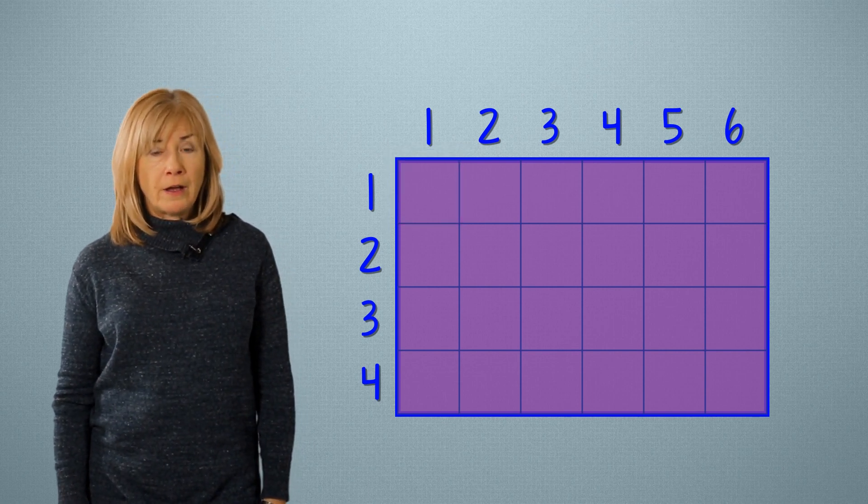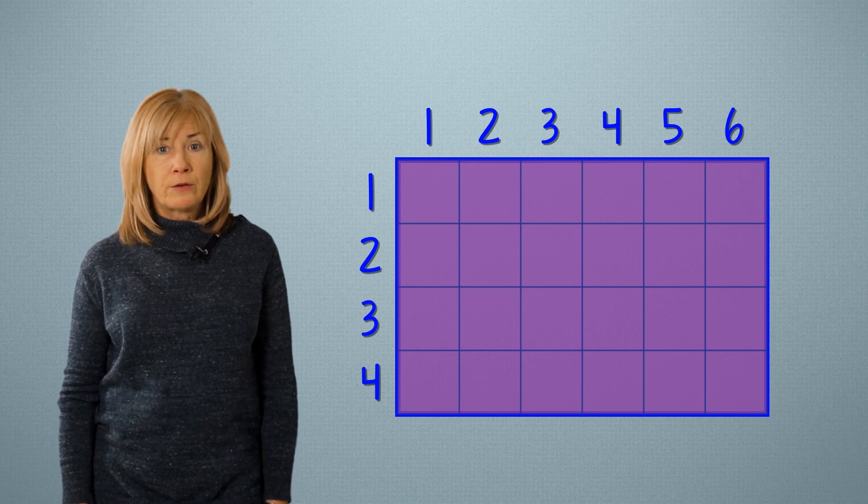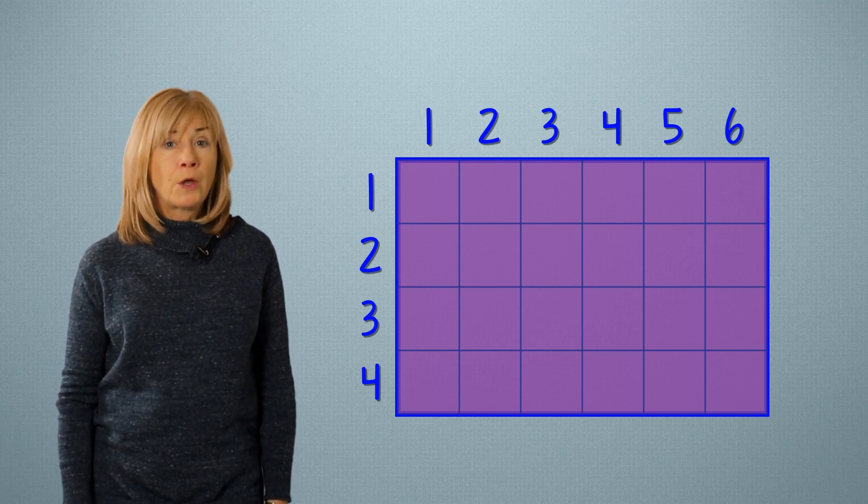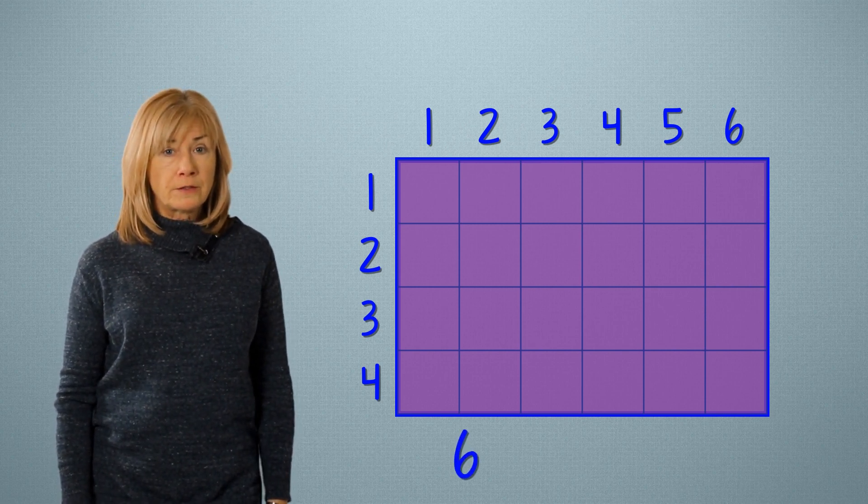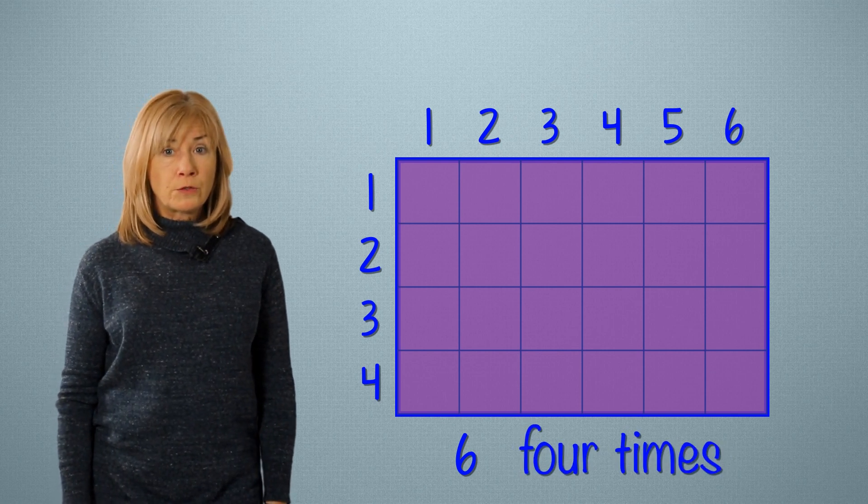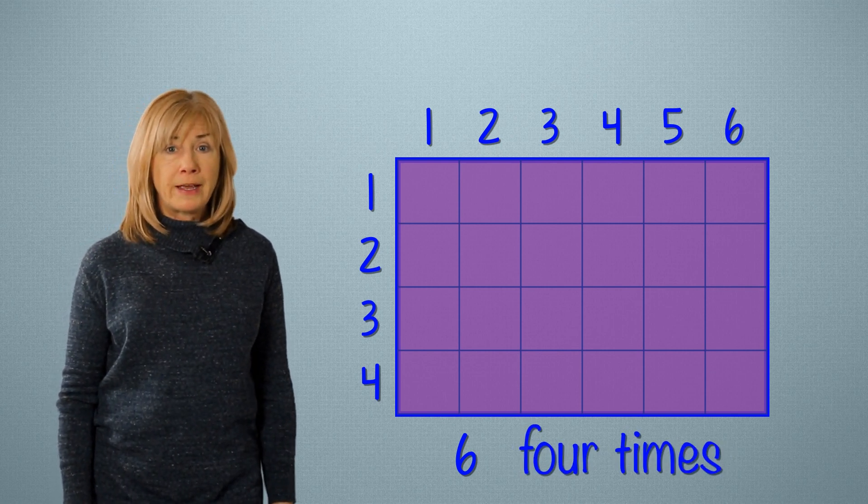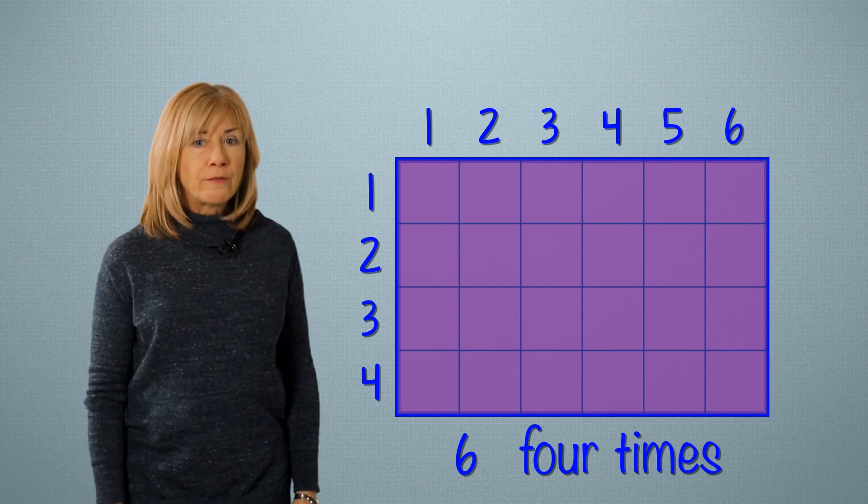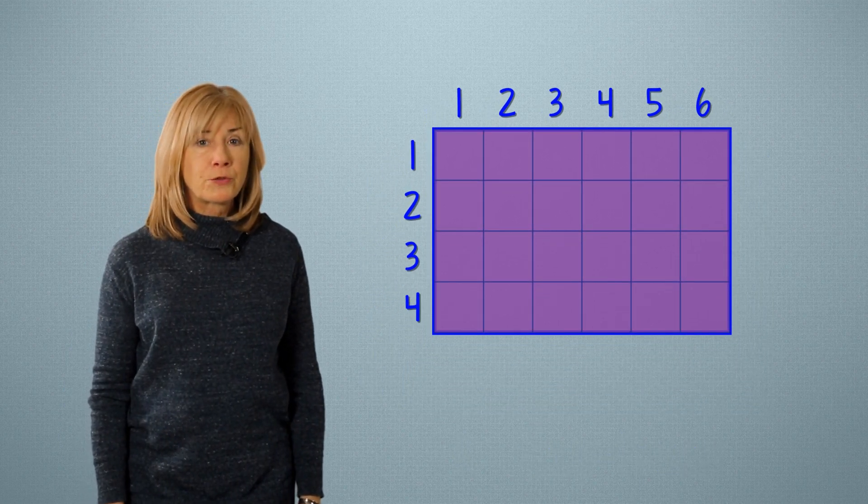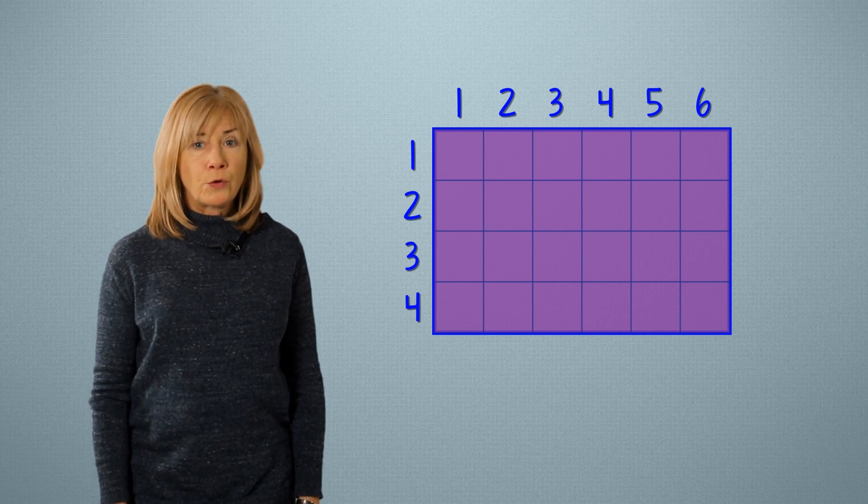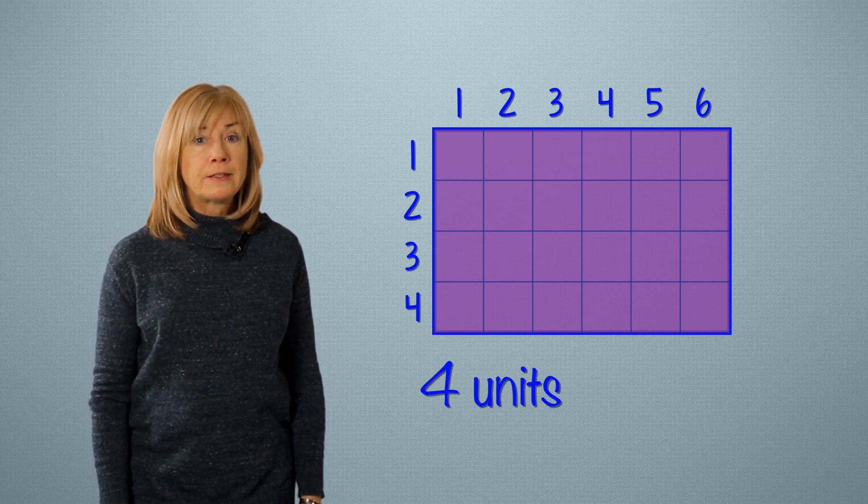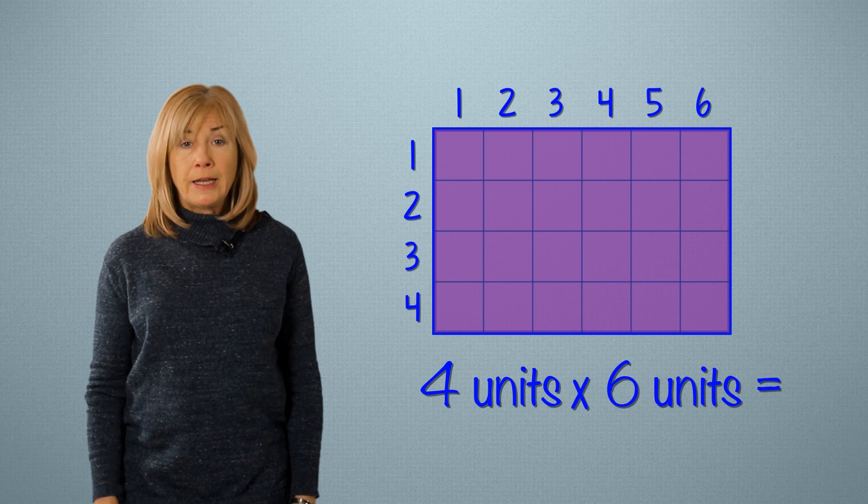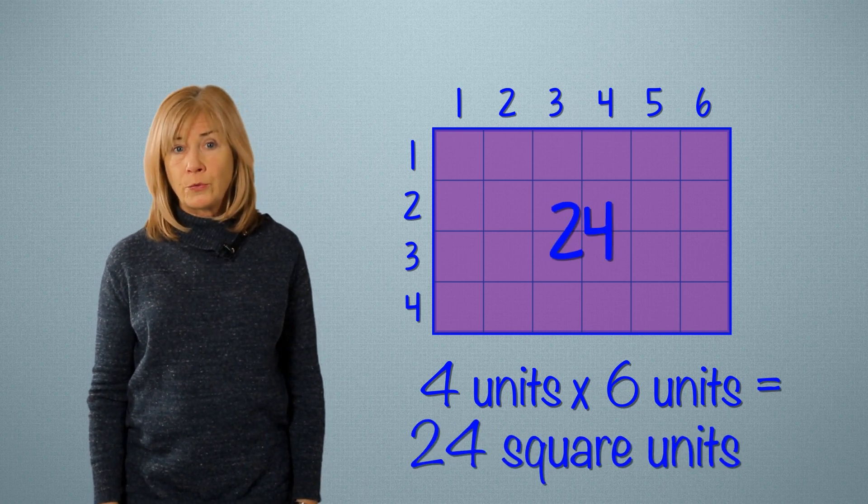To find the area, I know I have to count all of these units. So that's 6, 4 times. So what is the total area of this rectangle? I have 4 rows of 6 square units. So that's 4 units times 6 units equals 24 square units.